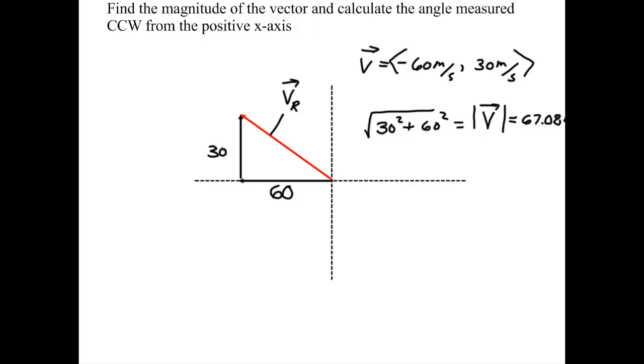So the magnitude is 67.08 meters per second. So now what you want to do is find the angle. Now what I recommend is if you're over in the second, third, or fourth quadrant, find the reference angle, meaning the angle that's closest to the x-axis. So I'm going to call this theta r. So we can say that the tangent of theta r, the reference angle, is always going to be opposite over adjacent. I'll put this in parentheses. 30 over 60. To find theta r, we take what's called the inverse tangent.